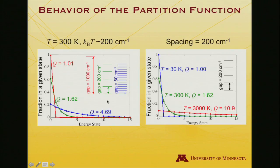On the other hand, as the density of states gets smaller, so now let's make the gap 200 wavenumbers. That's about equal to kT. And what you find is that Q has increased to 1.62. So there's more accessible states, it's still not a huge number. And the ground state is now about 60%, looks like the first excited state is about 22%, the second excited state, maybe 8%, and so on. And eventually, again, you can't access the highest states.